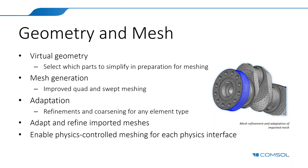On the mesh generation side, we now have improved quad and swept meshing. The adaptive mesher can now both refine and coarsen the mesh — previously it could only refine — and it can do so for any element type, not just triangles or tetrahedrals. You can now use the adaptive mesher for hexahedral, prismatic, and other element types. You can even adapt and refine imported meshes, such as an imported Nastran mesh. Also, physics-controlled meshing can now be enabled for each physics interface individually, which is important for multiphysics modeling.